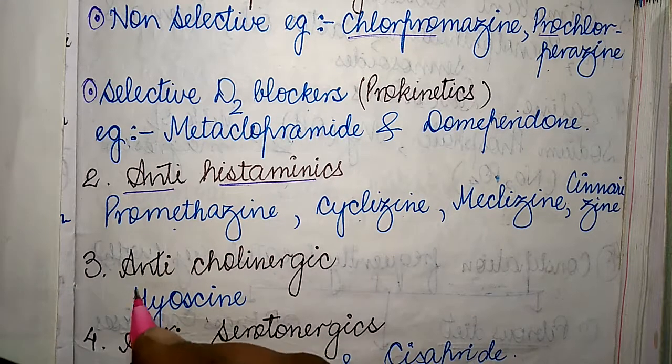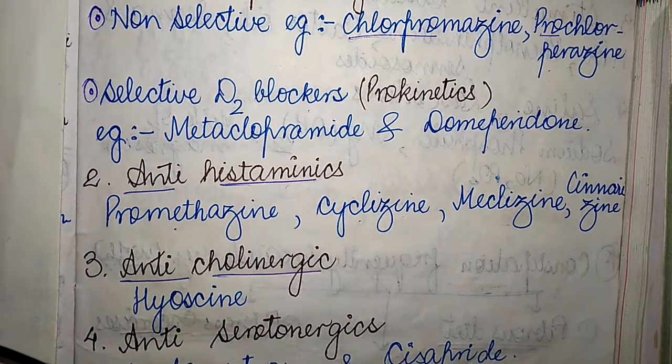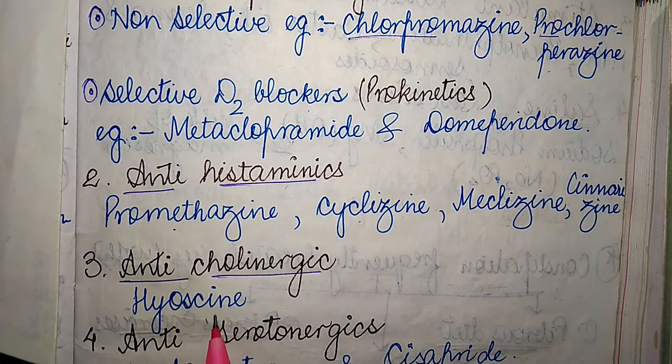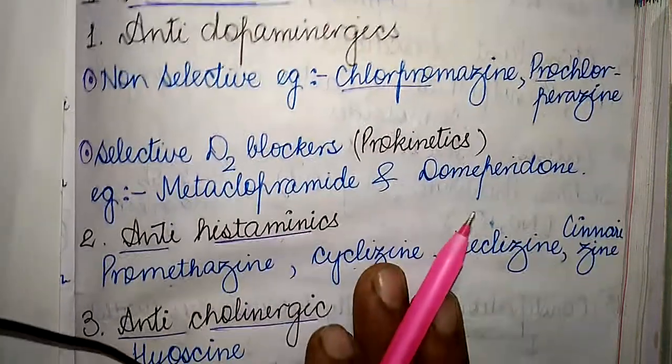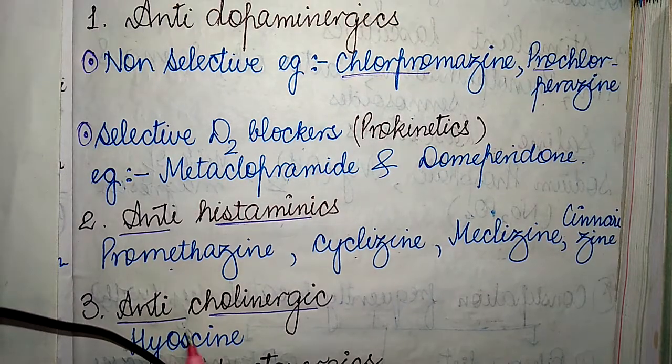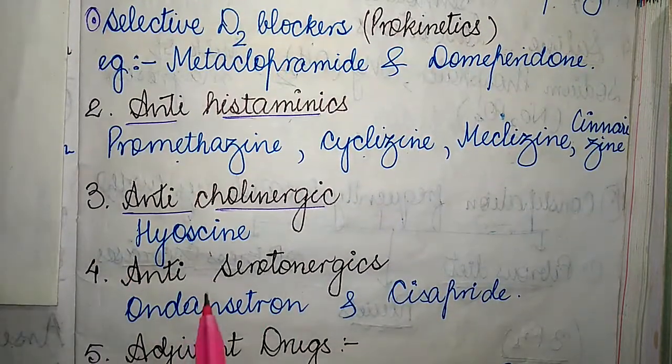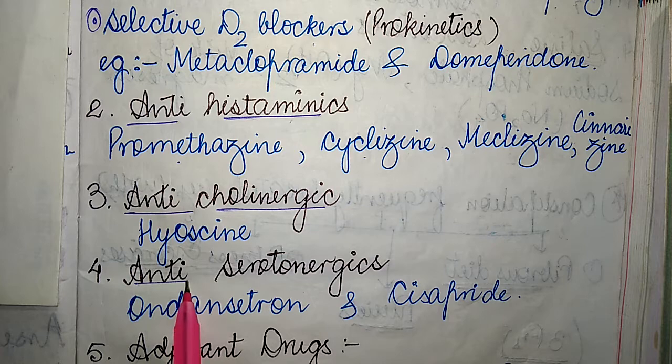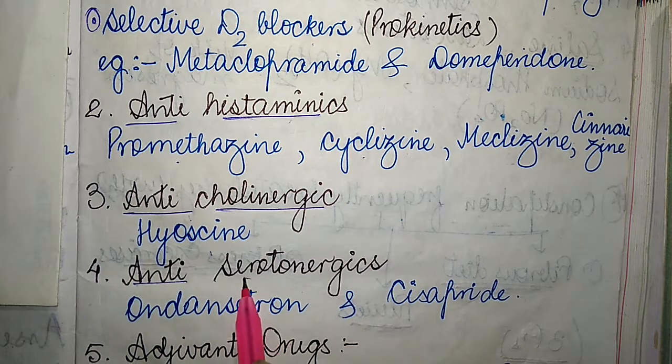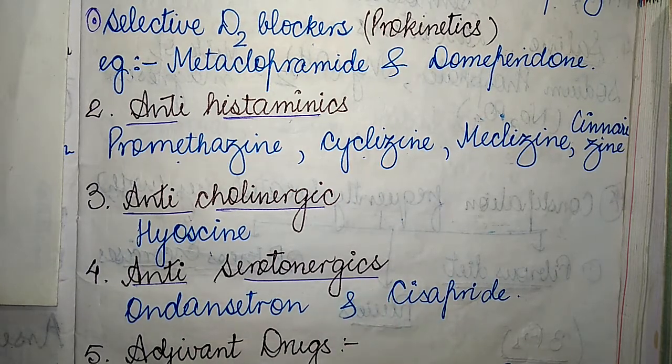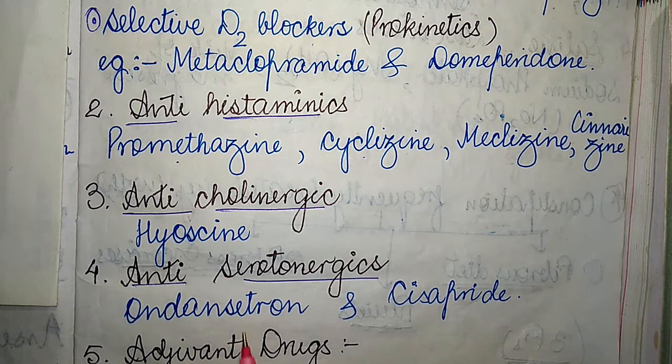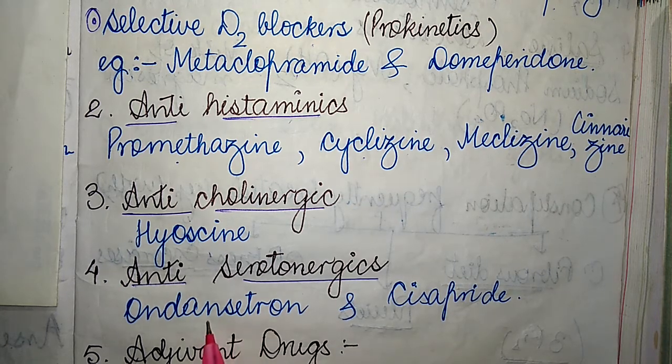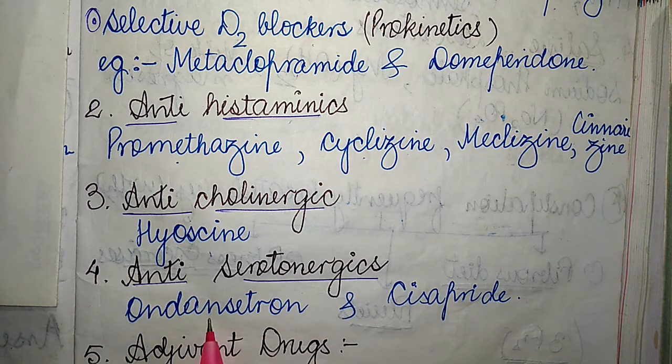The third A refers to anti-cholinergics, which includes hyoscine. The fourth A refers to anti-serotonergics, which includes the commonly available drugs ondansetron and cisapride.